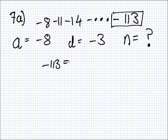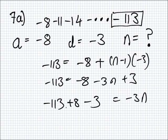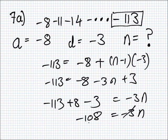We say minus 113 equals minus 8 plus N minus 1 times D, minus 3. Like earlier. So, that's minus 113 equals minus 8 minus 3N plus 3. Minus 113 plus 8 minus 3 equals minus 3N. What's that? Minus 116 plus 8. Is that minus 108?